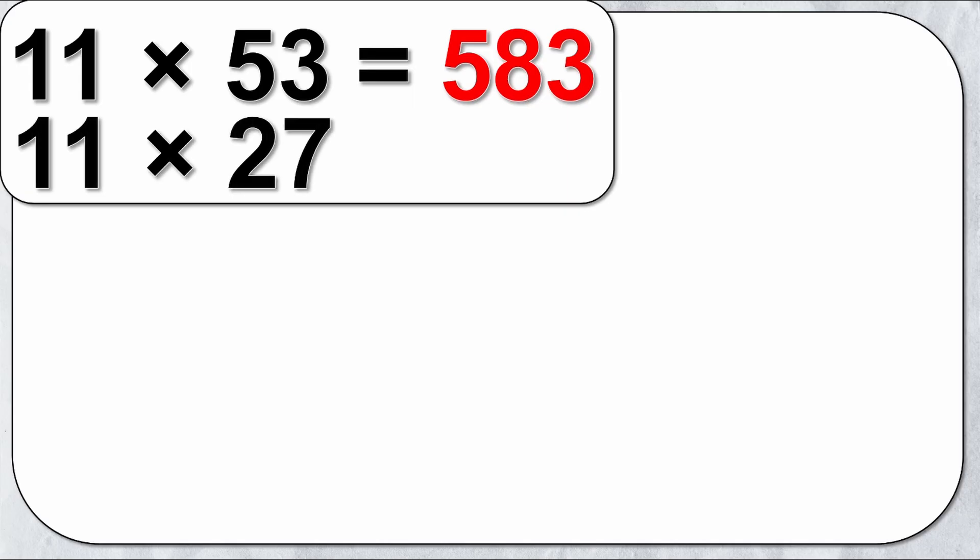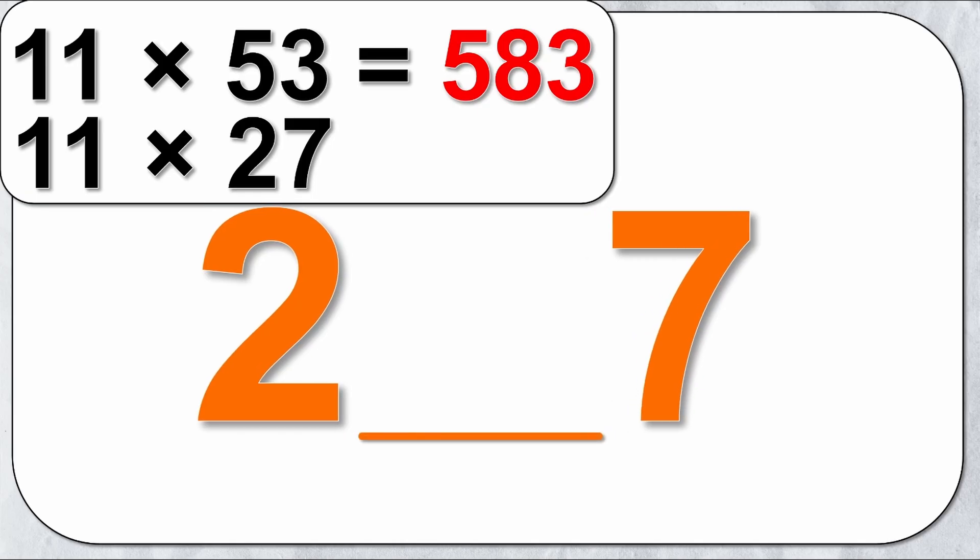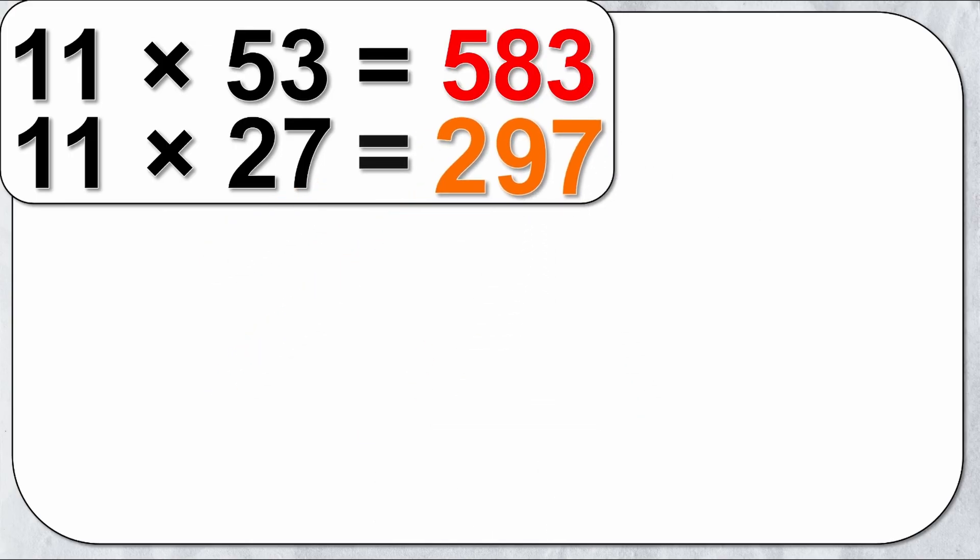Let's try it again. 11 times 27. I'm going to write 27, pull the numbers apart. The first number is 2 and last number is 7, and the middle number is 2 plus 7 which is 9. So 11 times 27 is 297.